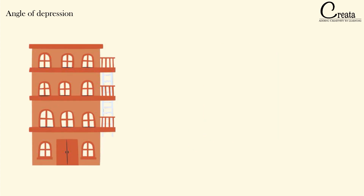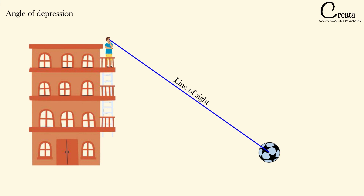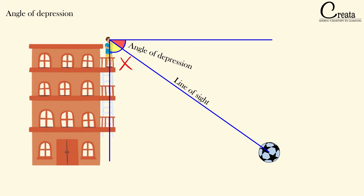Now let's understand the angle of depression. Here the person is standing on a floor of a building and looking downward at an object — for example, a football on the ground. The imaginary vision line is the line of sight, and the angle formed between the horizontal line and this line of sight is the angle of depression. Remember: angle of depression is when we are looking downward, and angle of elevation is when looking upward. Note that the angle is measured from the horizontal line, not the vertical — this is a common mistake students make.